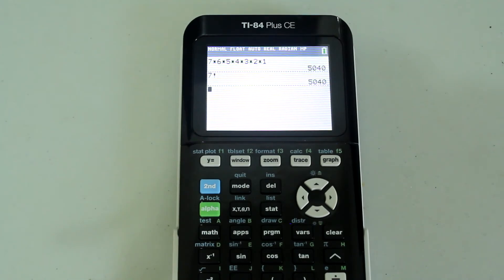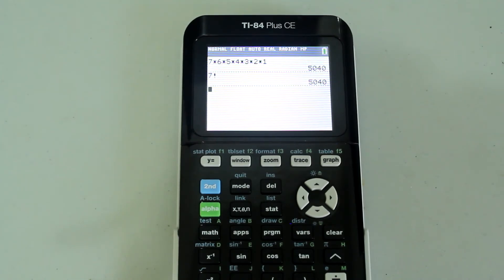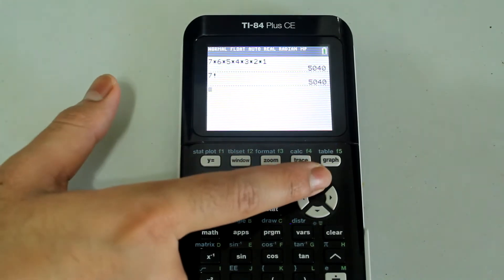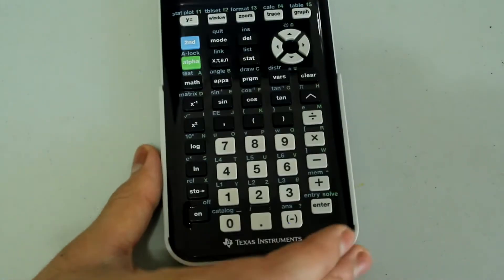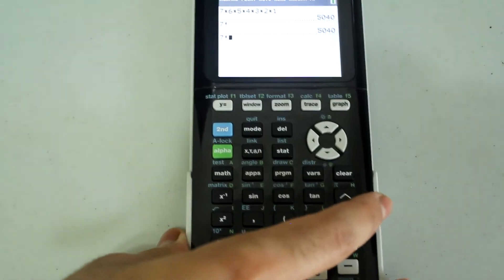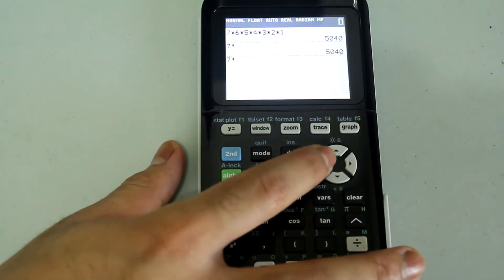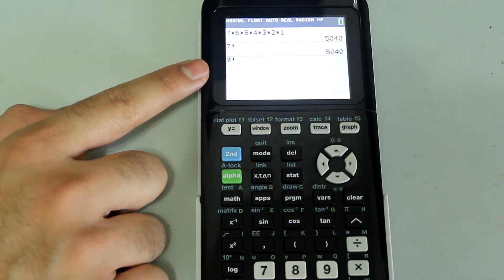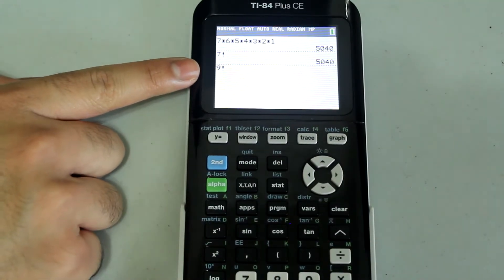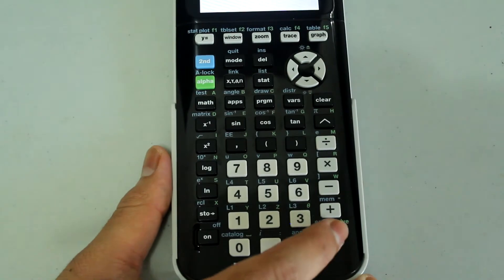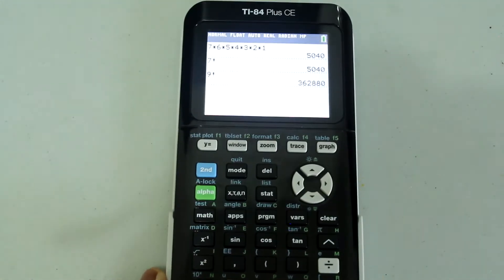Now, since we already have the factorial option on the screen, if you wanted to reuse the factorial feature, you simply arrow up until this is highlighted and press enter. Then just arrow left and change the number. Once the cursor is blinking on the 7, I'm going to make this a 9 and arrow right. So now I have 9 factorial. If I press enter, I get 9 factorial.